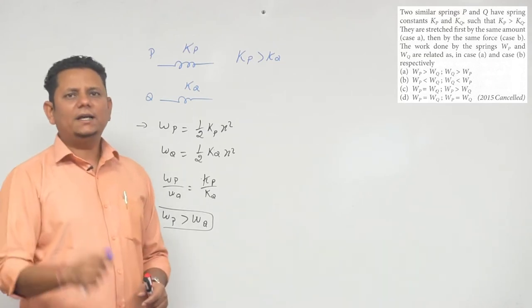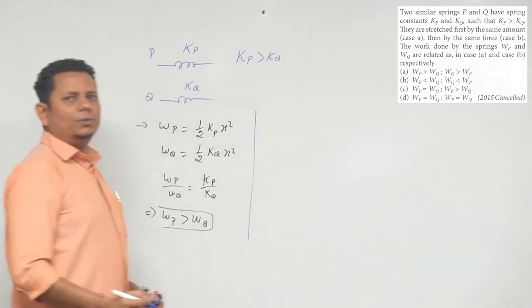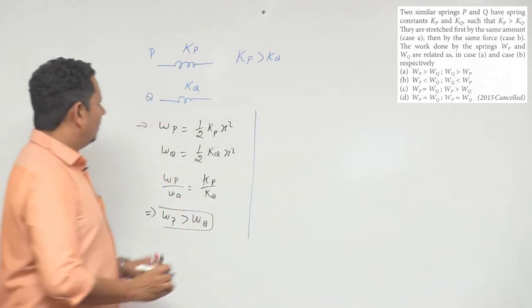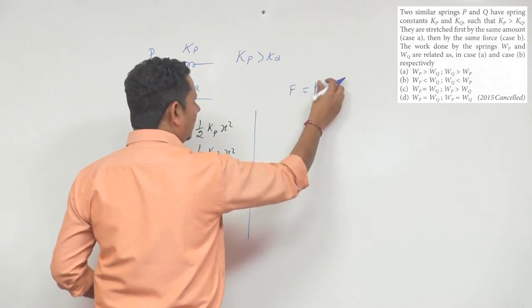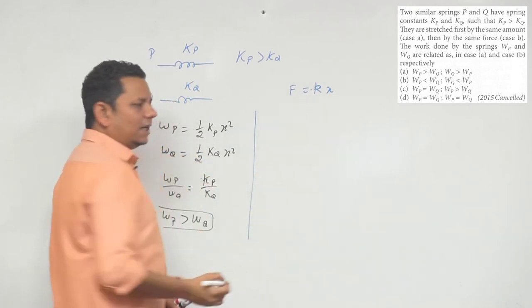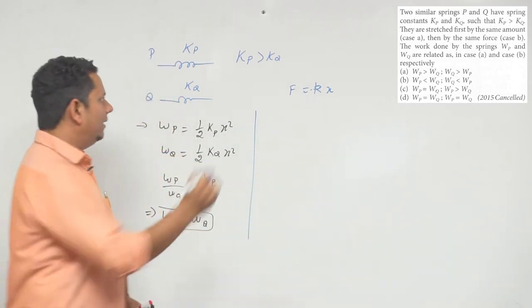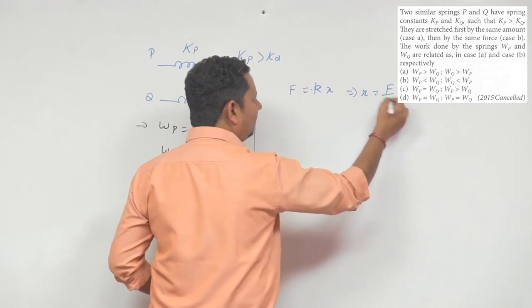But at the same time we want to calculate the other case. So in the second case, we have the same amount of force. Now because we have the force, we know that F equals Kx. In this case it's minus Kx, so if we have the same force, then X will be equal to F by K.